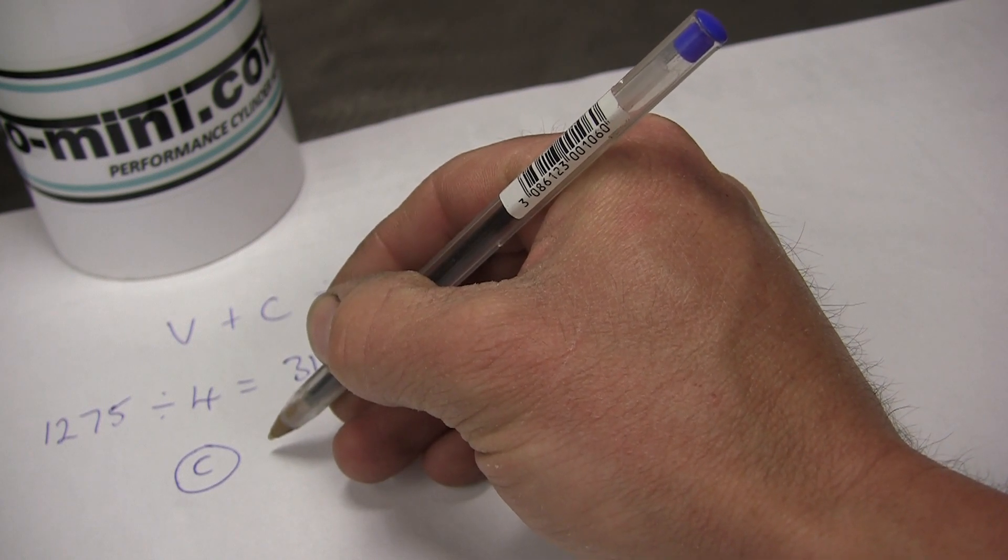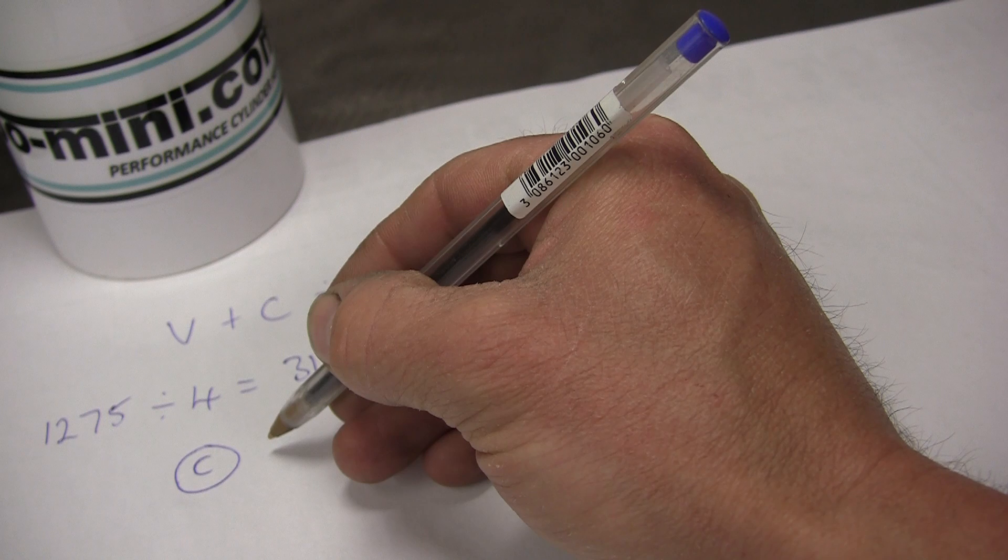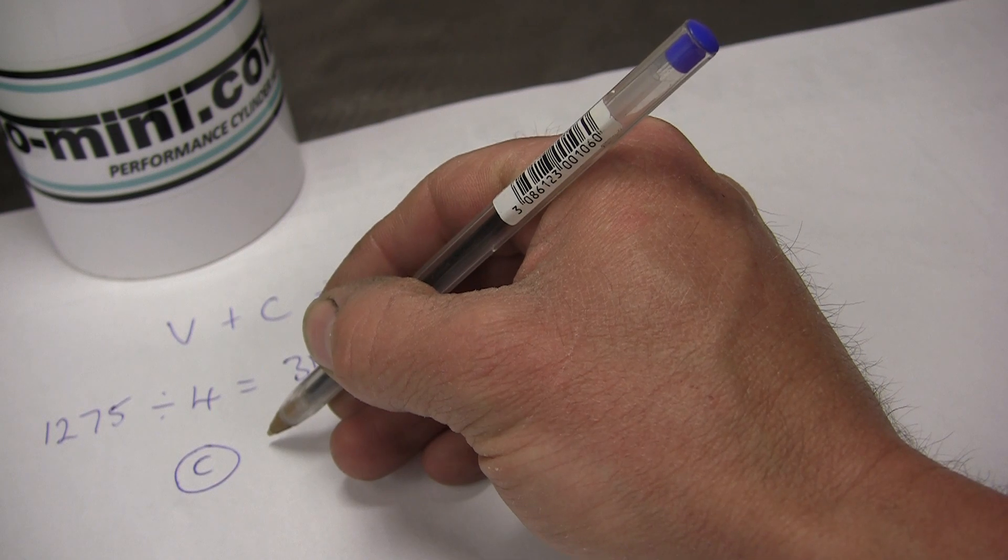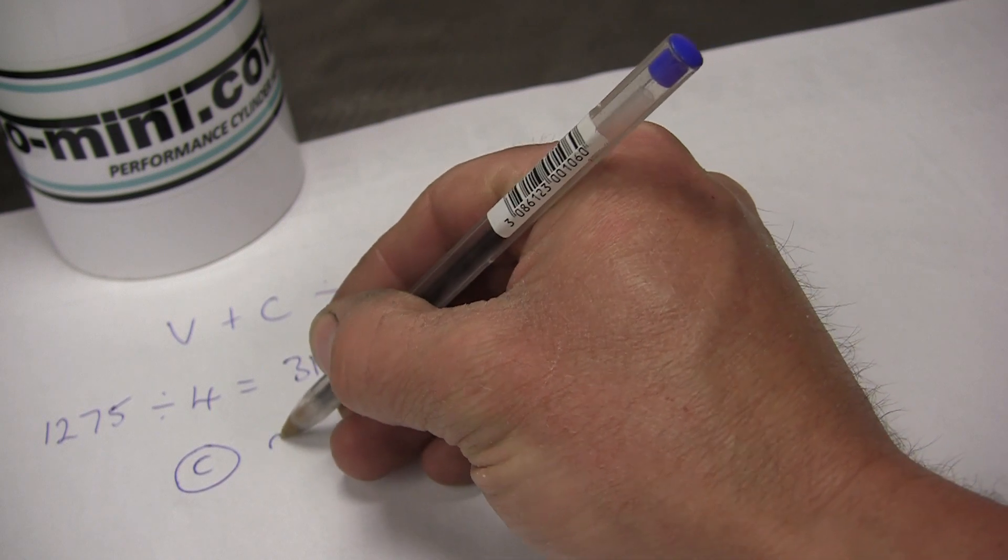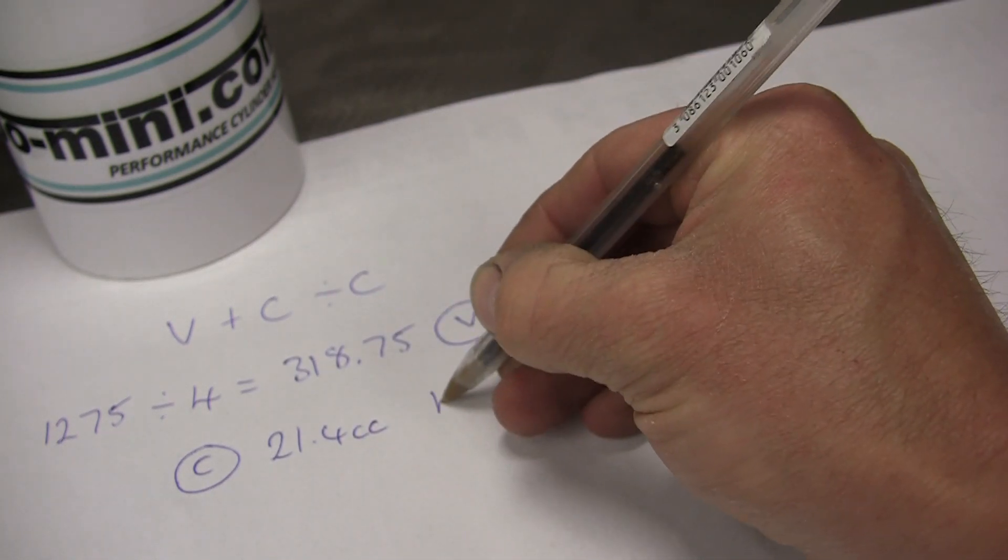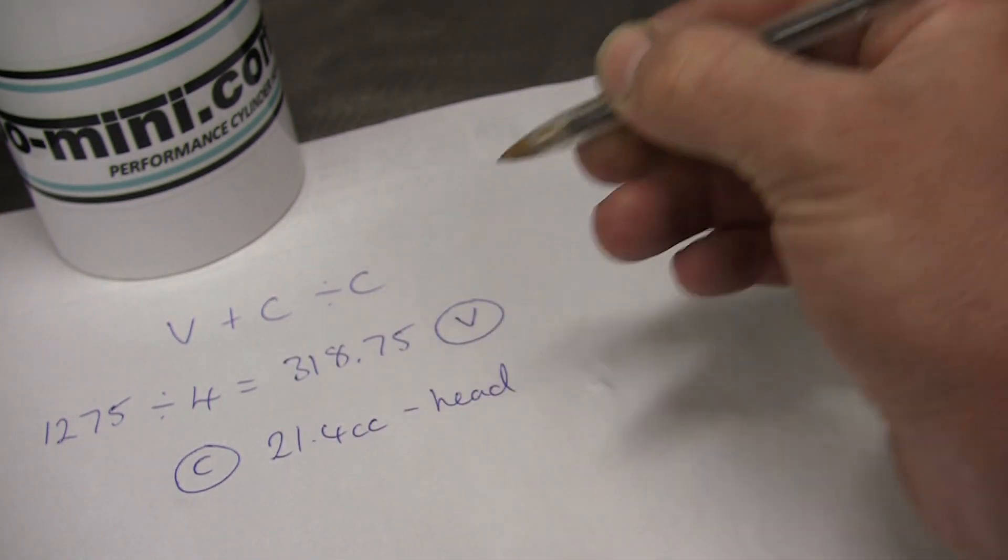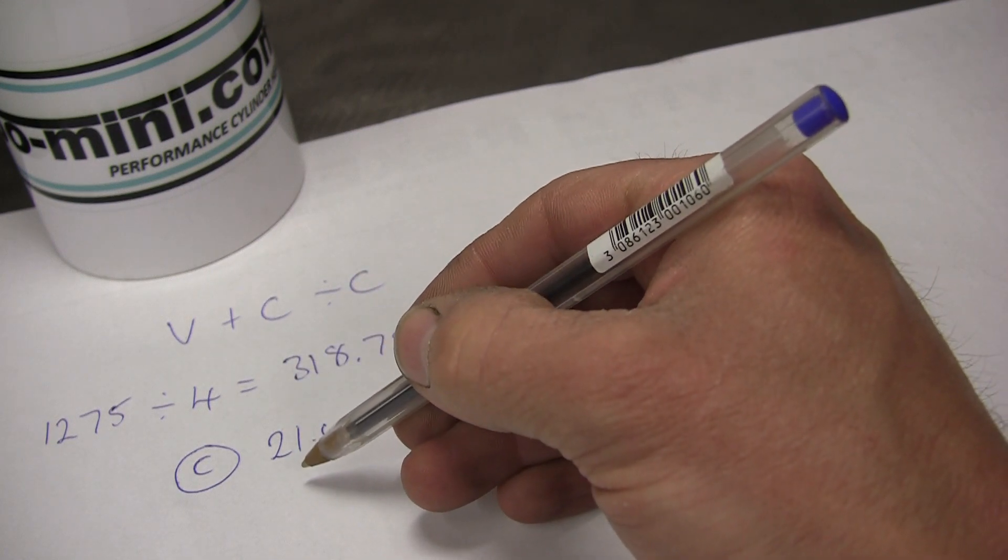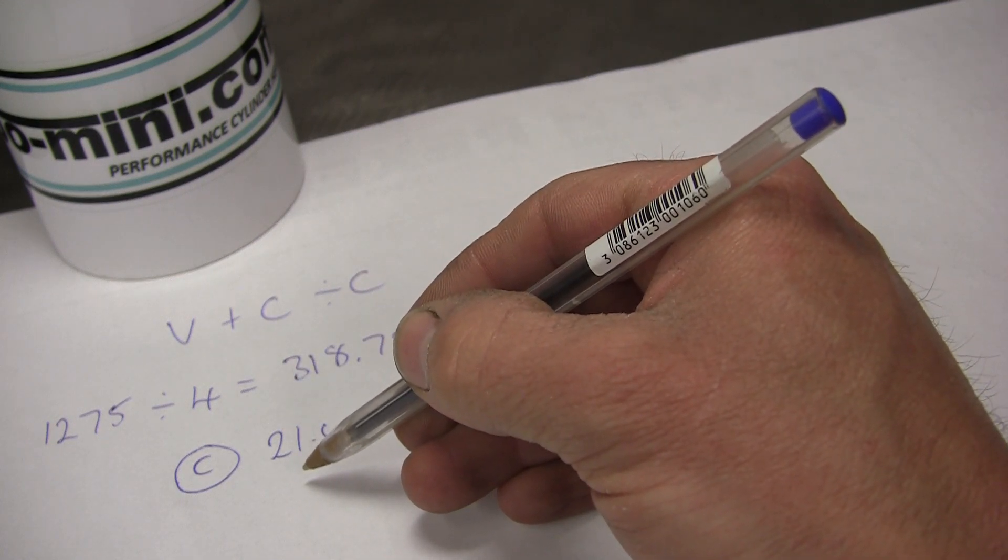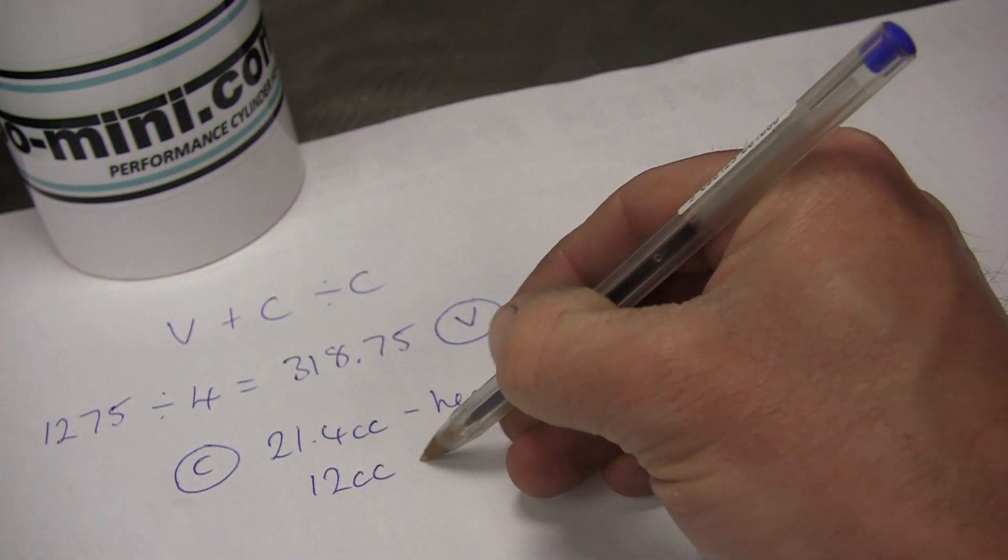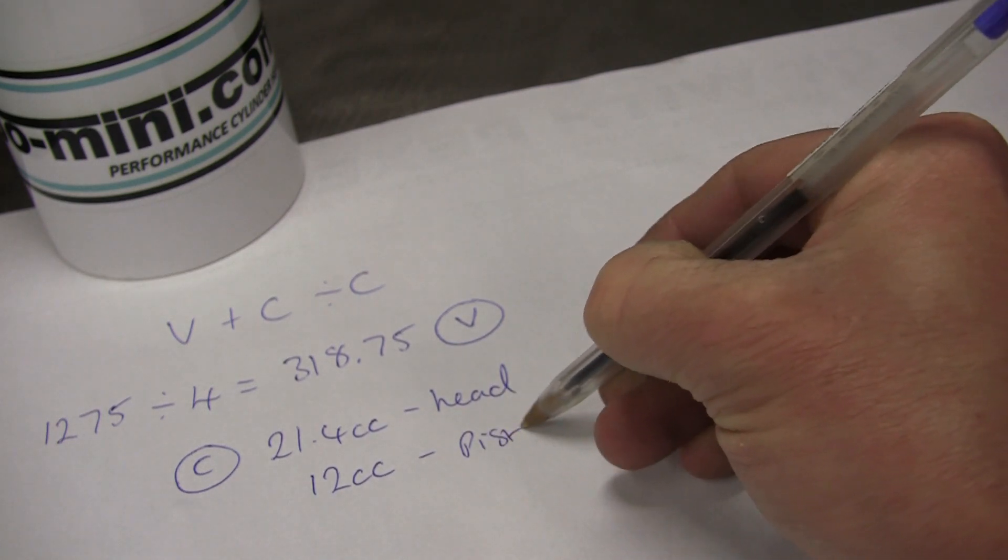To work out C, we need to know the volume contained within the chamber in the cylinder head. If you saw my other video on how to measure that, it's pretty easy. Otherwise, we'll assume it's a standard chamber. For this video, we'll say 21.4 cc is the volume in the head. We then need to know the piston dish volume.